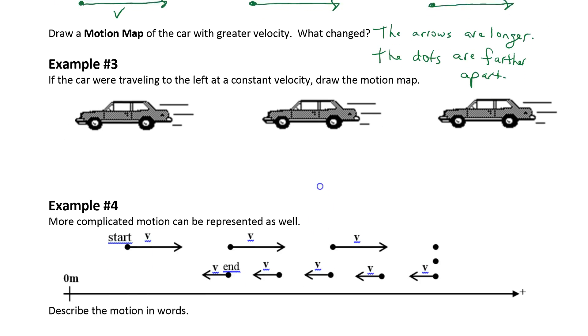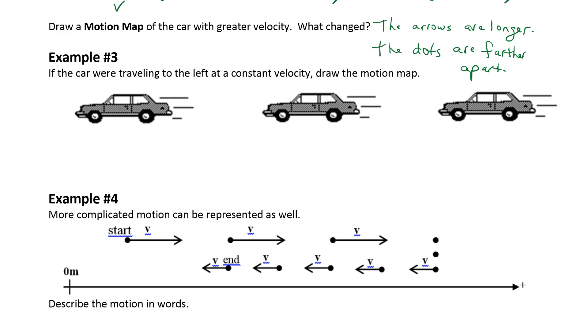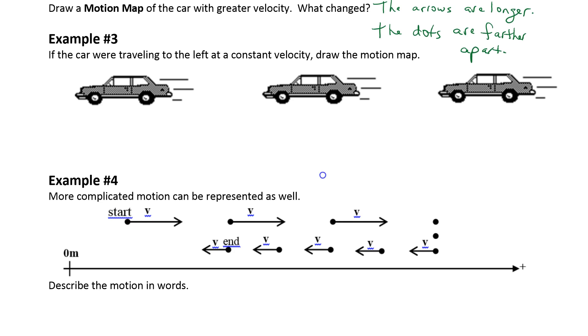Example number three. If the car were traveling to the left at a constant velocity draw the motion map. Why don't you try hitting pause and doing this one on your own.